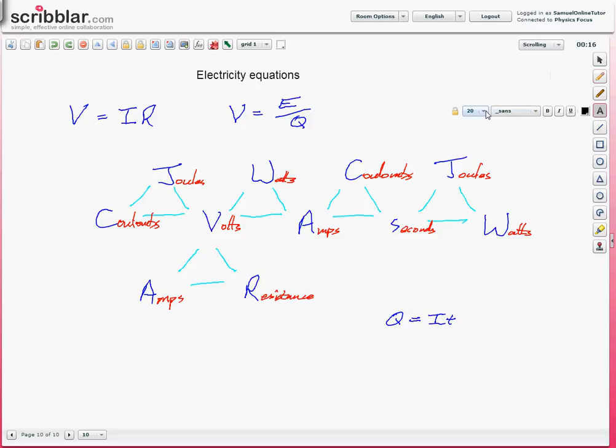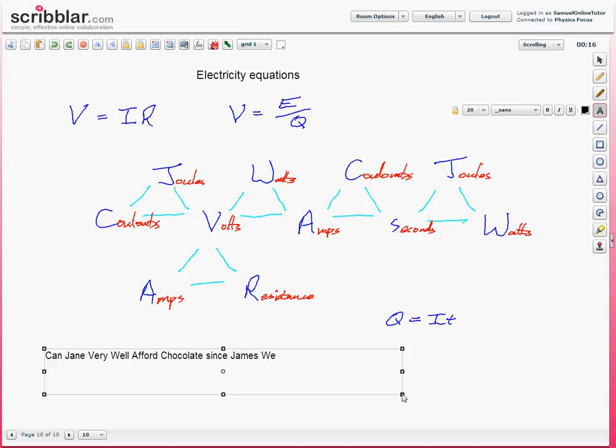Now, to go back to the sentence you need to remember then. The center of the whole thing here. Can Jane very well afford chocolate since James went? Capital letters there for the different units. New line, alas, very rarely. Now, I warned you it was a sad story.